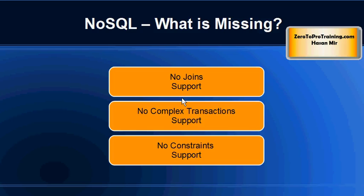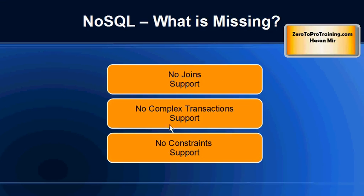What is missing from NoSQL databases compared to relational databases? Joins are not there. Because of joins, relational databases are not very scalable, so in NoSQL databases this functionality is not implemented, and hence the scalability and performance comes in. The support for complex transactions is not there — you can't say insert these three records, then update two records, then check something, and if it's not true, roll back everything. Transaction support and constraint support are not there.